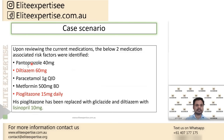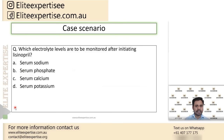The patient has been started on lisinopril, an ACE inhibitor — angiotensin-converting enzyme inhibitor. After starting lisinopril, the parameter we need to monitor is serum potassium levels, because one of the side effects of ACE inhibitors is hyperkalemia. We must keep monitoring the patient's serum potassium levels.